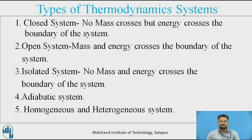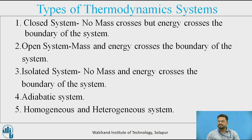An adiabatic system is one which is thermally insulated from its surroundings. It can exchange work with its surroundings; if it does not, then it becomes an isolated system. A homogeneous system consists of a single phase. Example: a mixture of air and water vapor. Coming to the heterogeneous system, a system which consists of two or more phases is called a heterogeneous system. Examples: water plus steam, ice plus water, and water plus oil.